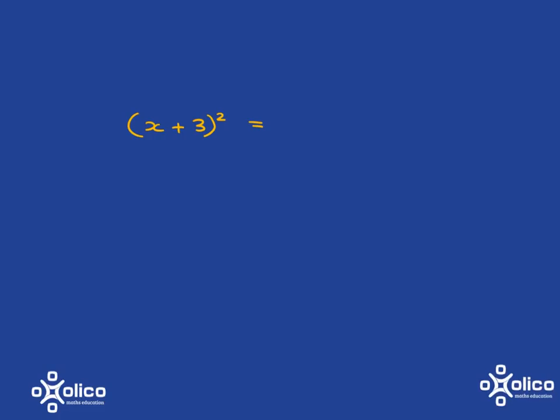And I hope when you were trying out the exercises, you weren't fooled into making the mistake that so many people do when faced with something like this. And just say x squared plus 3 squared is the answer, which is x squared plus 9. Because that is totally and completely wrong.